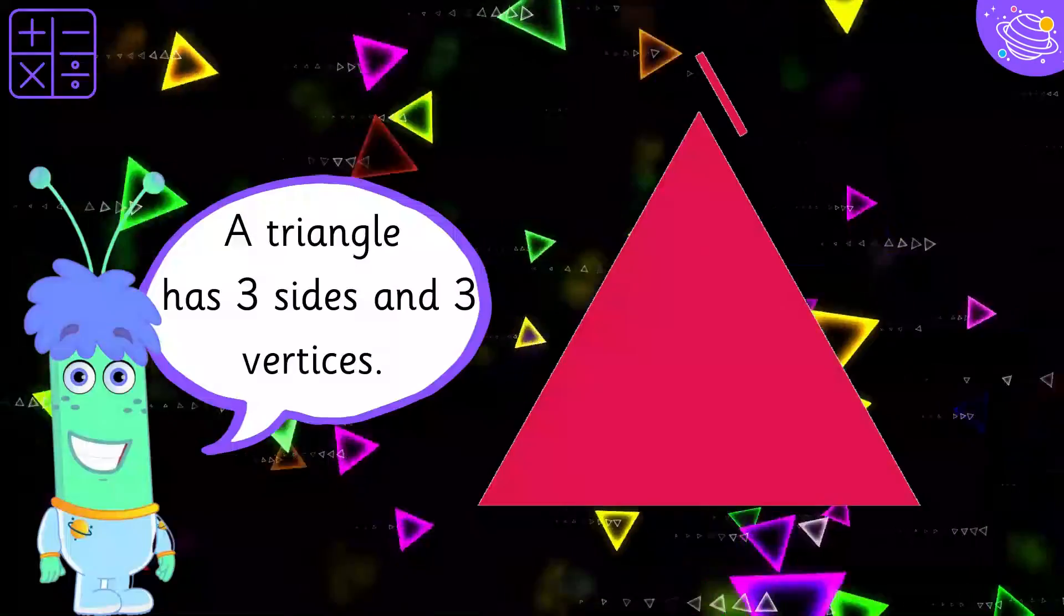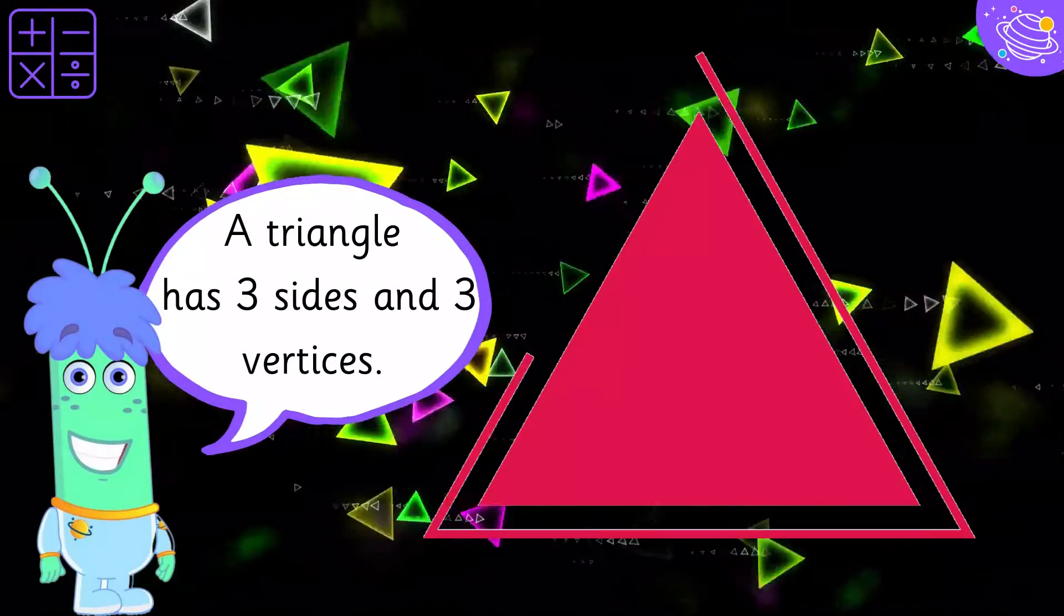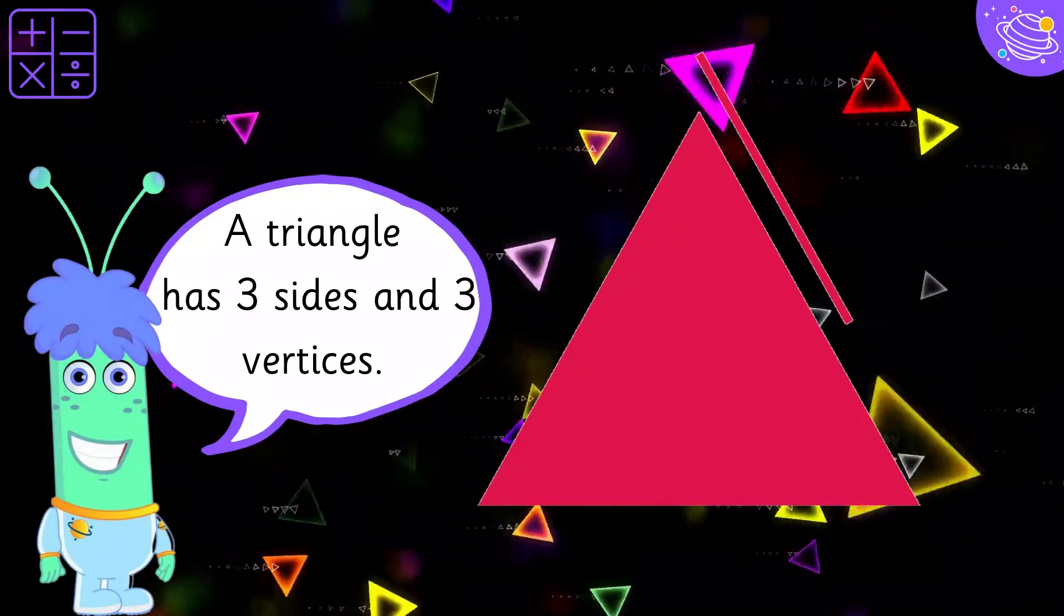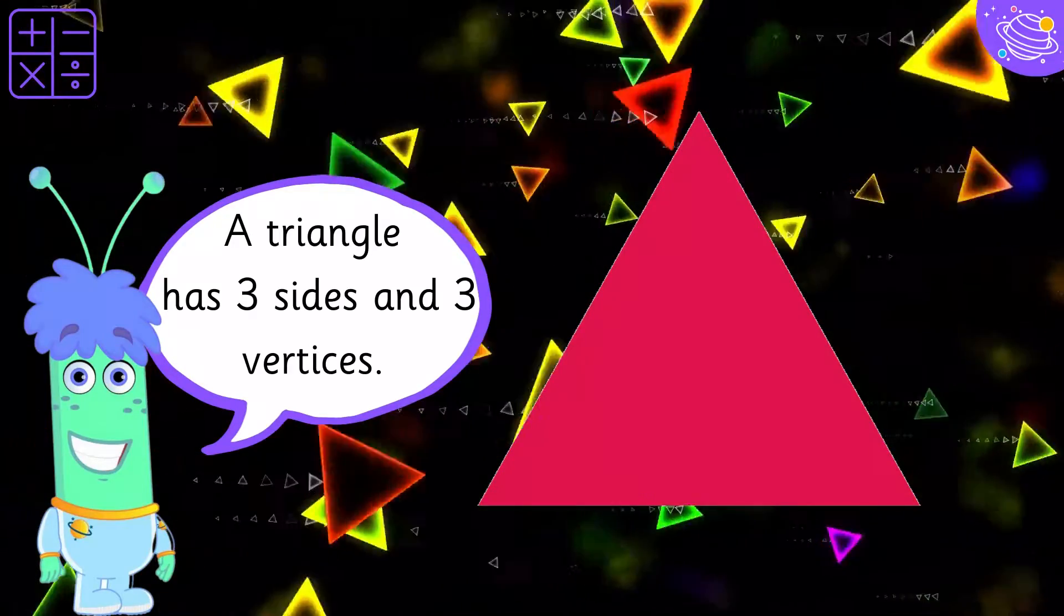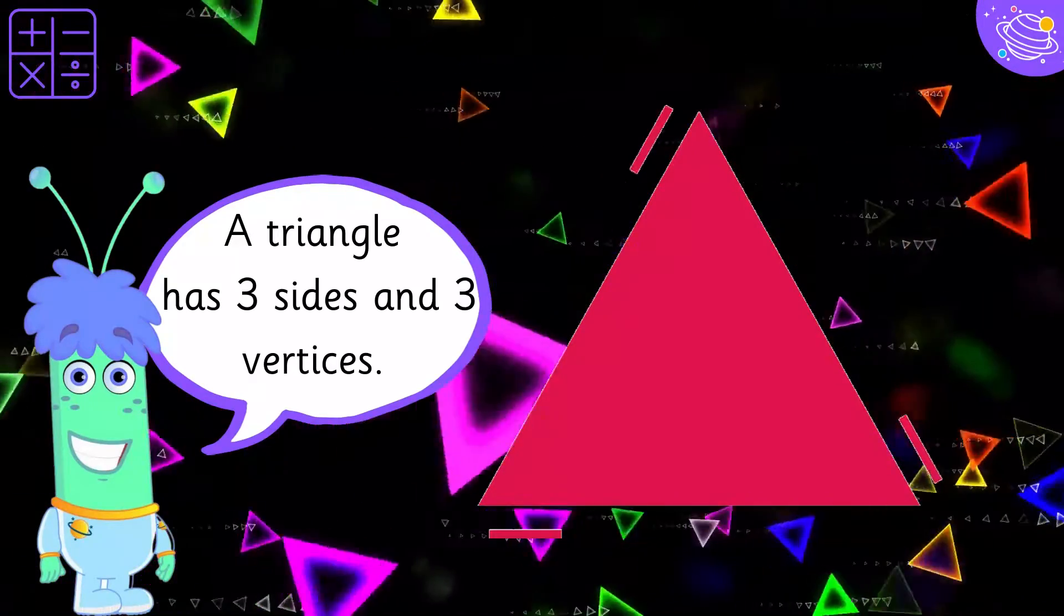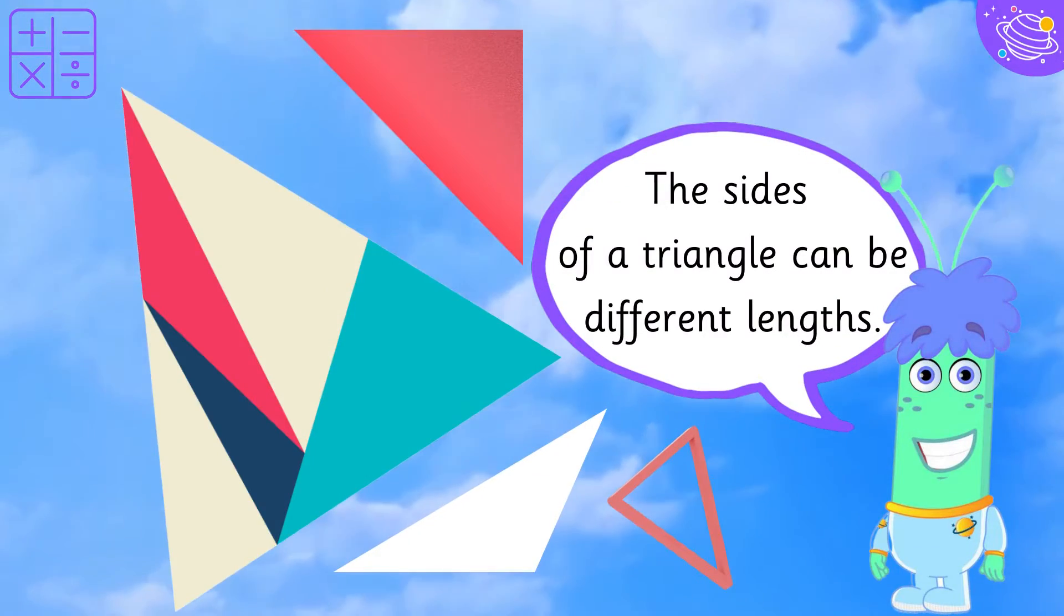A triangle has 3 sides and 3 vertices. The sides of a triangle can be different lengths.